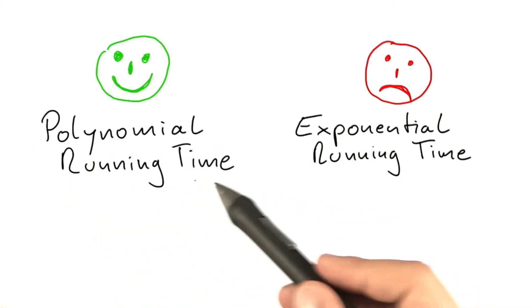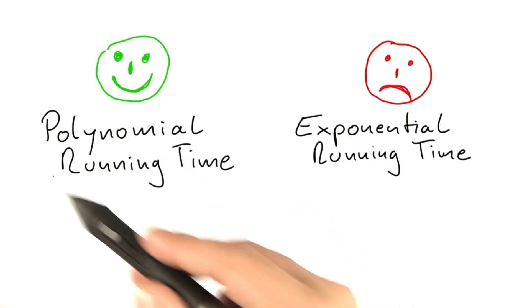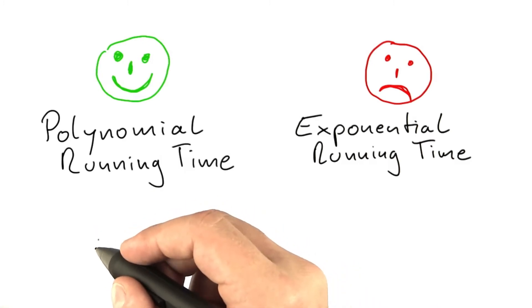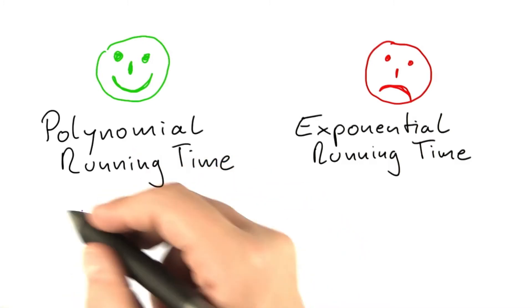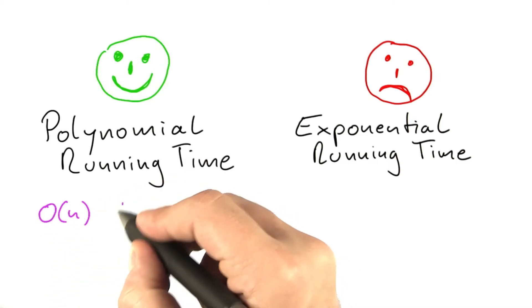The first case here is polynomial running time. Polynomial running time means that the algorithm has a running time that can be stated as some polynomial of the size of the input. So polynomial time would be an algorithm that has a running time of O of n, O of n squared.